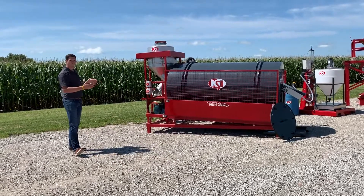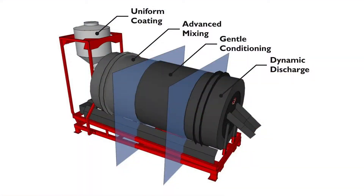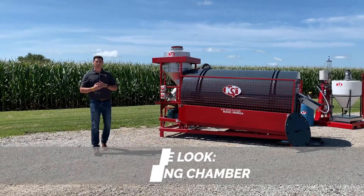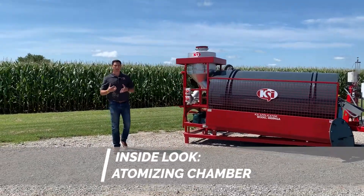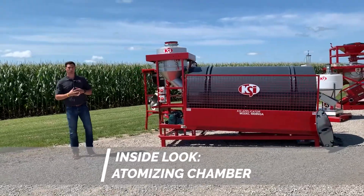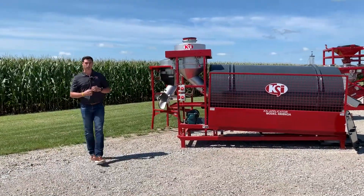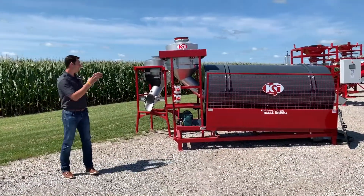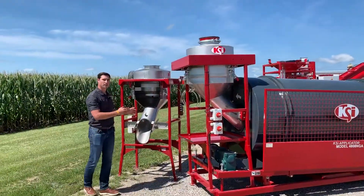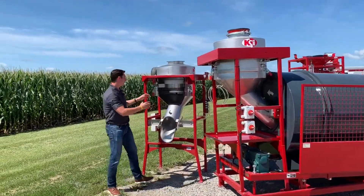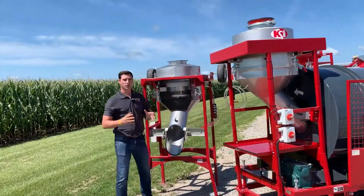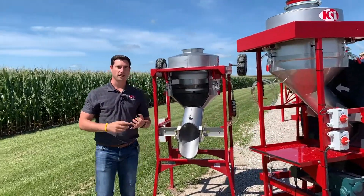The 4808 is a multi-stage applicator, so we have our initial application with the KSI atomizer and then the secondary mixing chamber with the drum. The atomizer is really where KSI spends a lot of our time talking about the applicator itself, because that's where a majority of the actual seed treating takes place, initially in the atomizer head. Inside of the atomizer itself, we want to get as much initial coverage as we possibly can from that seed to the chemical.